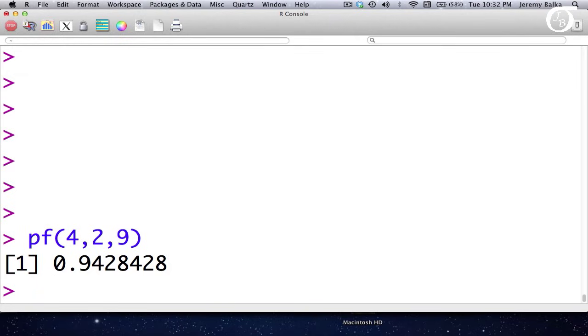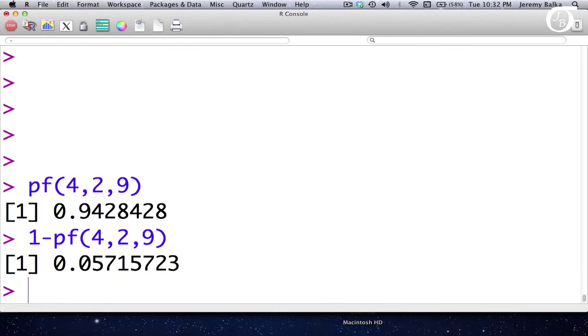we would get the area to the left of that value under an F distribution with 2 and 9 degrees of freedom. But we don't want the area to the left, we want the area to the right. So we could simply go 1 minus that value. 1 minus that value gives us the area to the right. And we'd see that our p-value is approximately 0.057.